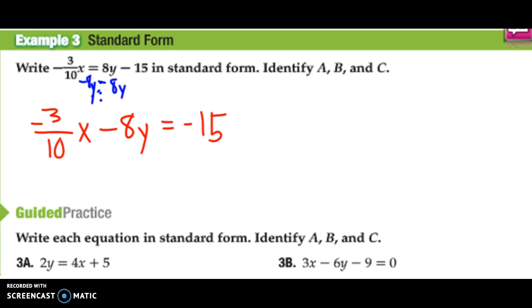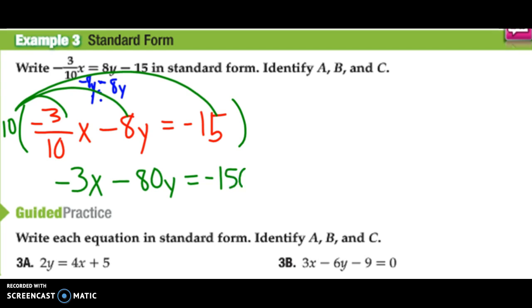The next thing I want: notice it's negative 3 tenths in front of x. I want to get rid of that fraction. So I'm going to multiply everything by 10, because if I distribute it, the 10 and 10 cancel each other out. You get negative 3x minus 80y equals negative 150. The last thing we said is we don't want A to be negative. To get rid of a negative on the front end, I'm going to distribute a negative 1 to everything. So I finally get 3x plus 80y equals a positive 150.